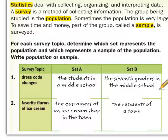A survey is a way of collecting information — that's like performing the experiment — and the group being studied is the population. So whatever the results are, or whoever you are performing the survey on, would be the population. For example, a population could be all the students in Alpine School District.